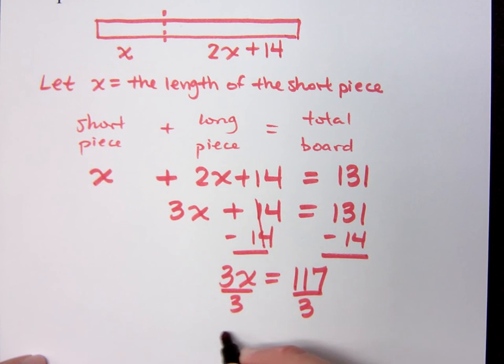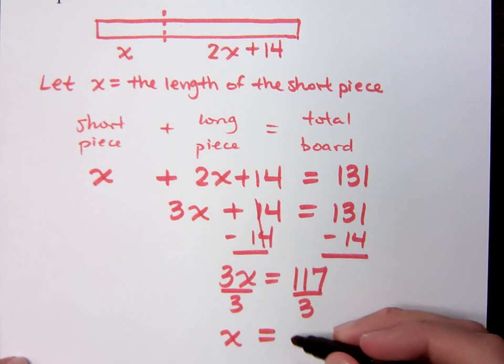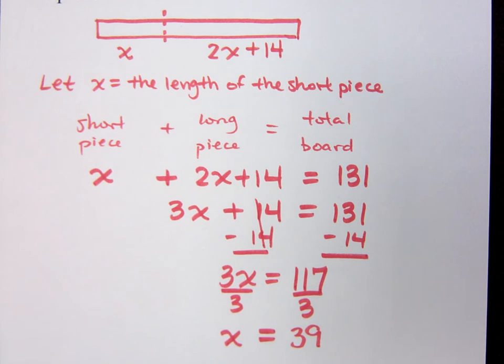There you go, asking again. Are you saying or are you asking? x equals 39. Okay. So we said x equals 39. Do you all agree with that? Yep. What does this mean in the problem? Well, hold on. What does x equals 39 mean in the problem? That's one length of the short piece. Right?